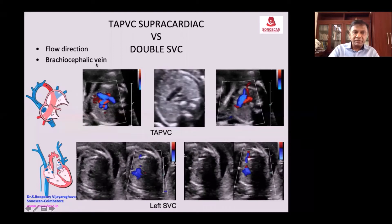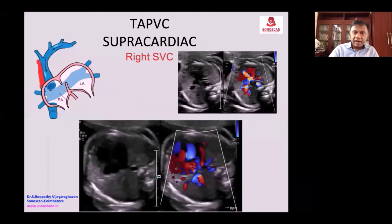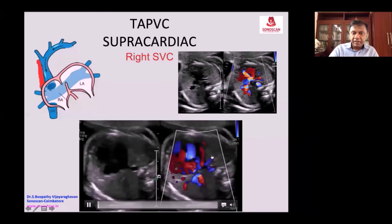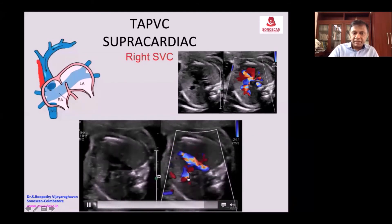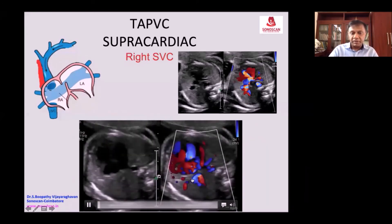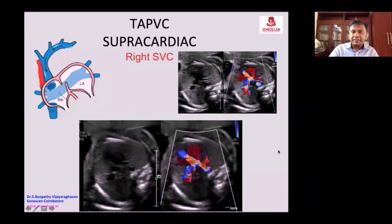You will see a dilated brachiocephalic vein in TAPVC joining the right atrium. The confluent vein is on the left side — red — then the brachiocephalic vein blue from left to right, and the SVC. You can see in the video the confluent veins — the vein going into the right SVC — and it ascends up by the side of the SVC and joins somewhere closer to the neck. As a result, there are two veins on the right side.